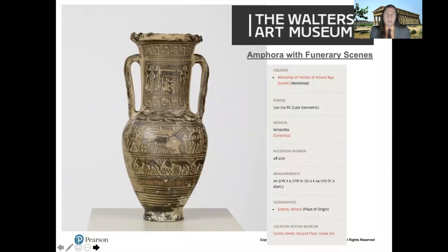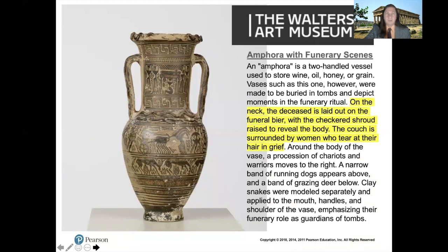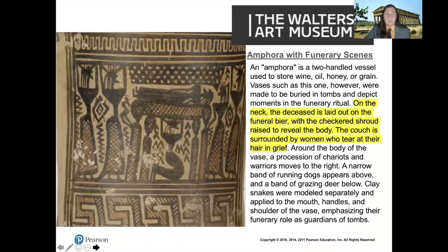A very similar vessel — in this case an amphora — shows basically the same funerary iconography on a smaller scale. It was probably used as a grave marker. In the top register we see the deceased on the funeral bier with mourners tearing their hair out and a checkerboard shroud on top. In the second register below, there are warriors with hourglass shields and chariots, with all negative space filled by geometric abstraction.